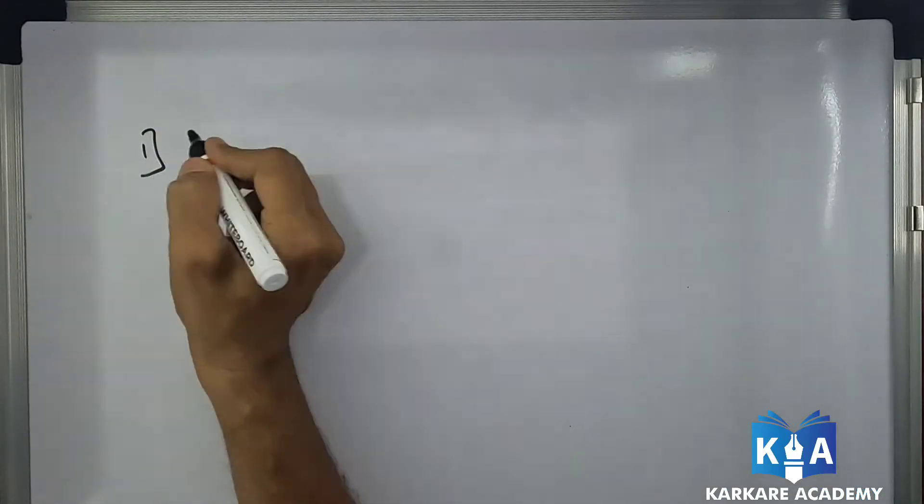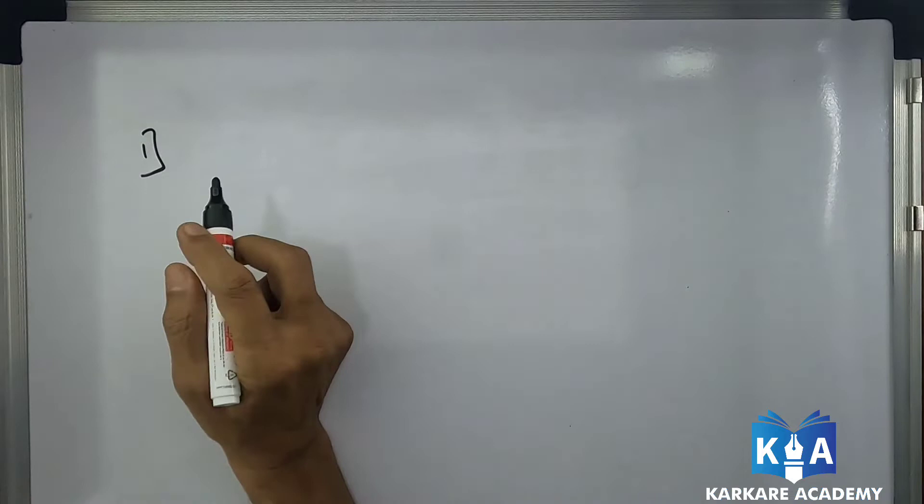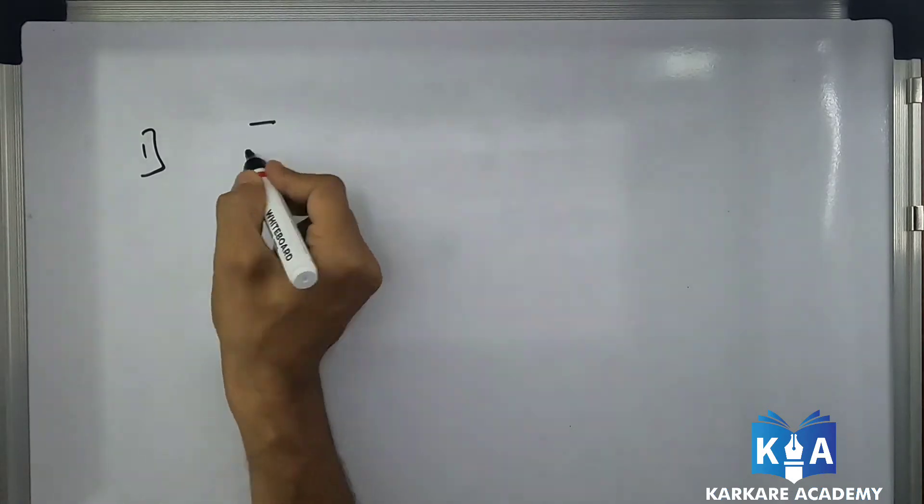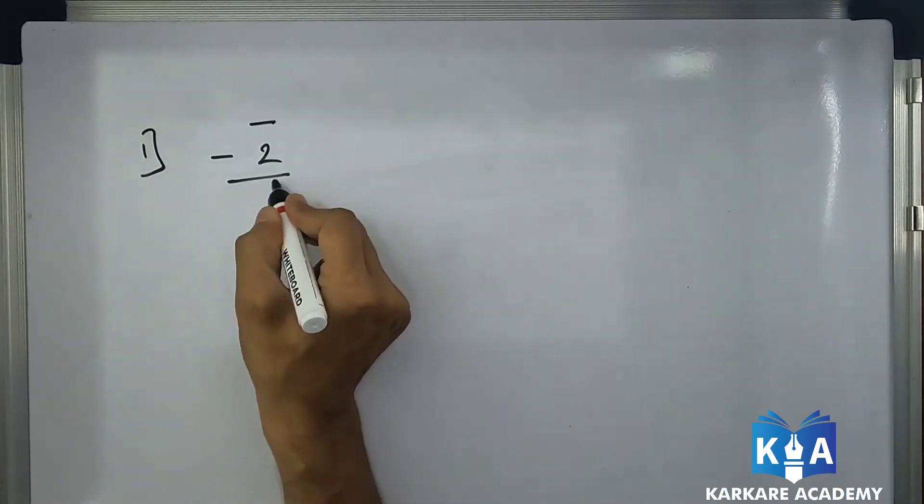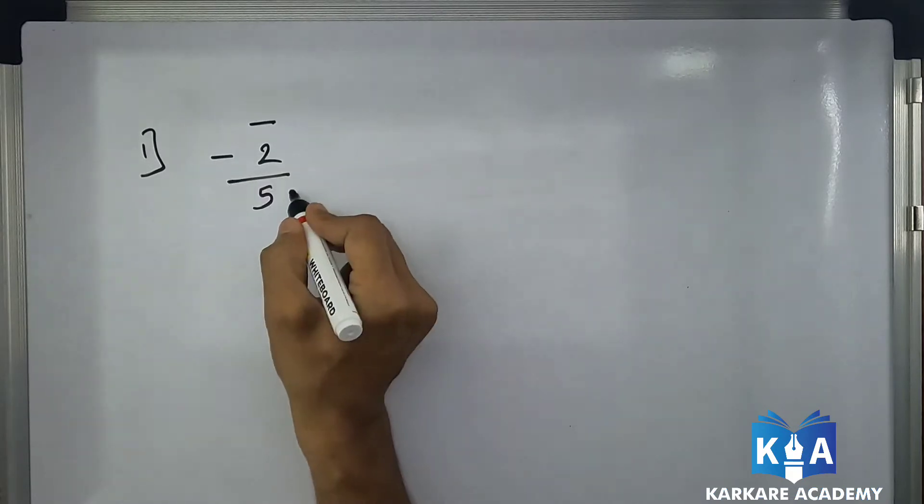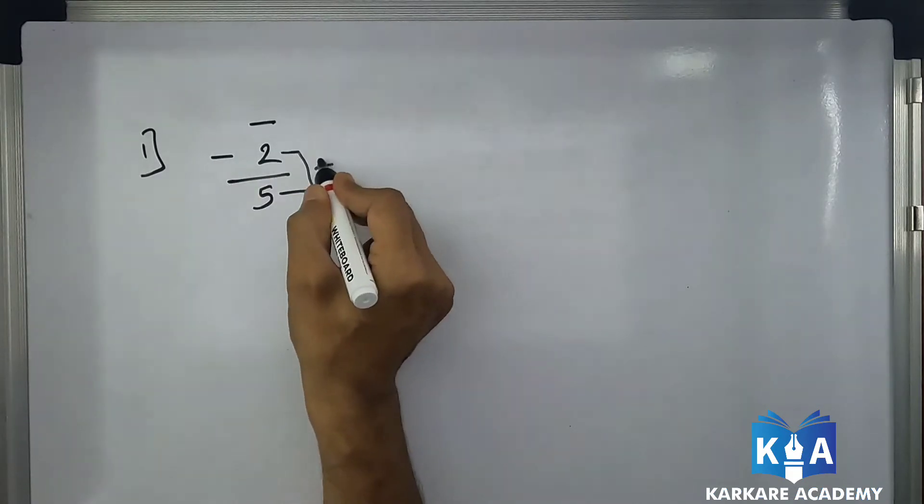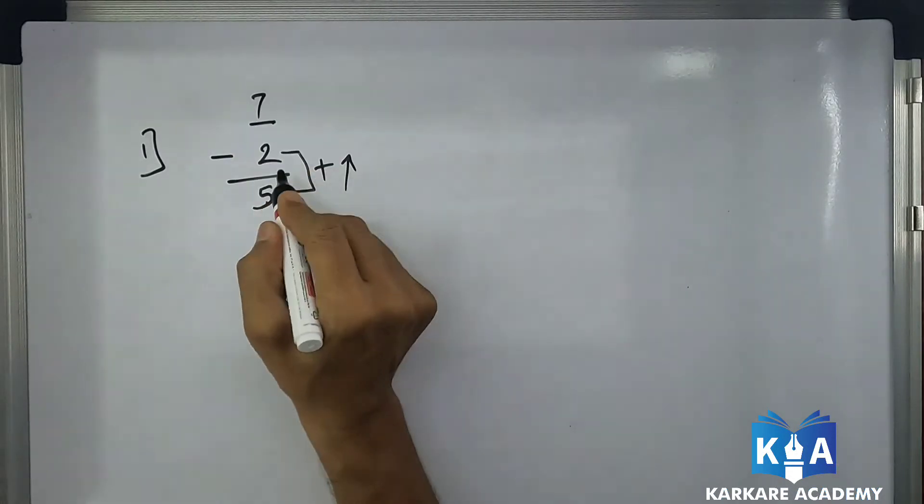So here is the first sum. How we are learning subtraction by addition method. What minus 2 is 5. So subtraction by addition method - do the addition of this one. 5 plus 2 is 7. Always go from the bottom, bottom to top. Second sum.